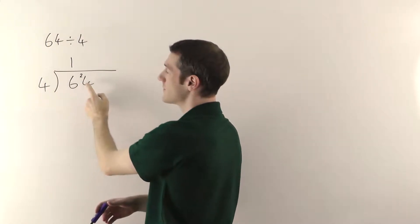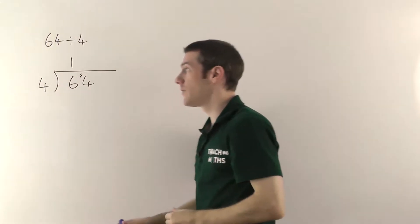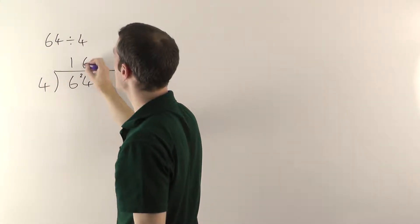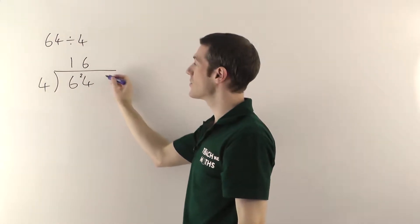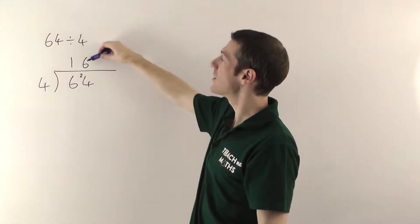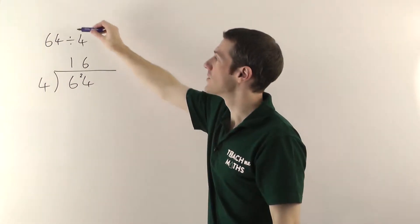So again, 4 into 6 goes once, remainder 2, and the 2 goes here to make the 4 into 24. Then you say, how many times does 4 go into 24? Well, 4 sixes are 24, so 4 into 24 goes 6. There's no remainder, so there's nothing to write on the next column, and in fact we don't have any more numbers there, so you can stop. Your final answer will always be at the top, so 64 divided by 4 is 16.